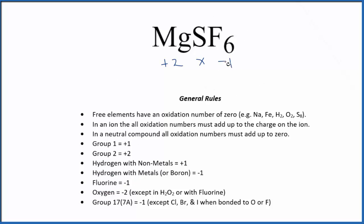You've got to look at this and see we have a negative 1 times 6, that's negative 6. And negative 6 plus 2, that gives us a negative 4. So the sulfur, that's going to have to be positive 4.